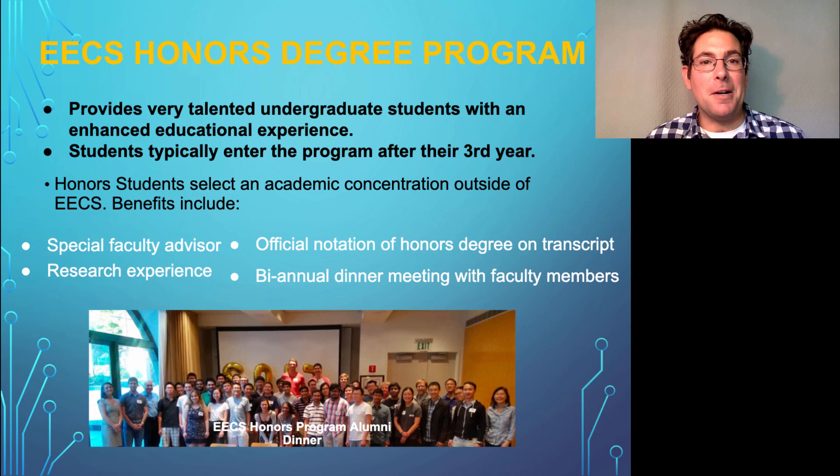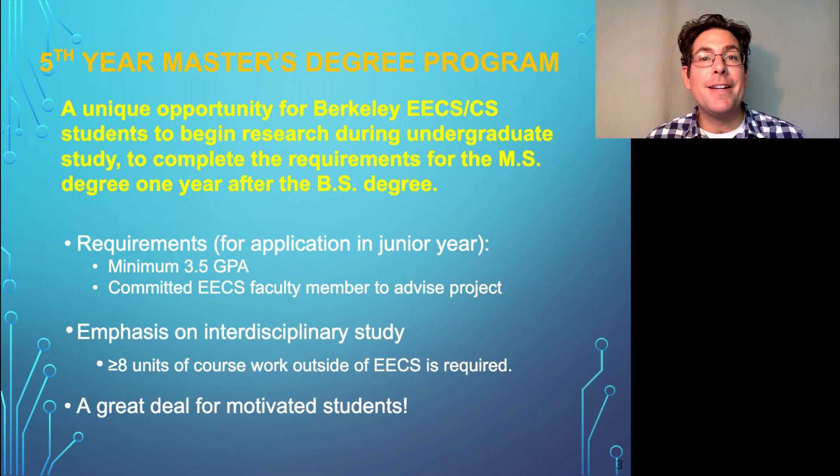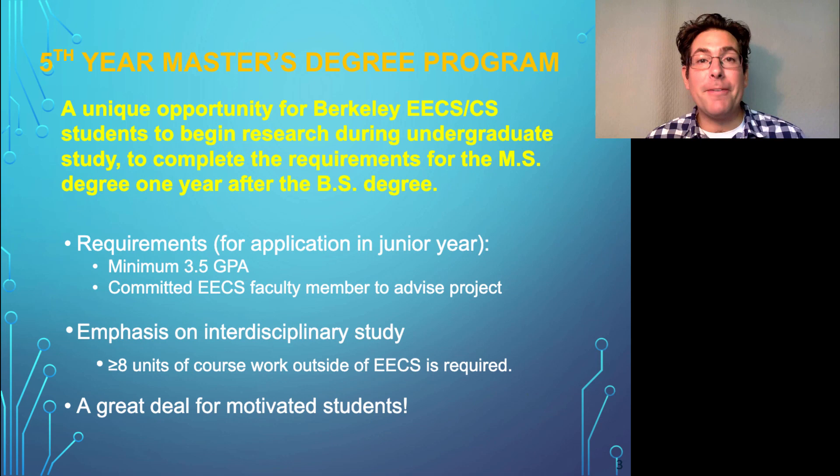There's an honors program that you apply to in your third or fourth year, which lets you pursue an academic concentration outside of EECS. And there's a fifth-year master's degree program—if you've started research as an undergrad and want to spend a fifth year at Berkeley finishing that research and getting a master's degree, you can apply. It's for students with a strong GPA and an existing research project, and getting a master's degree in one year instead of two is very appealing to some students.